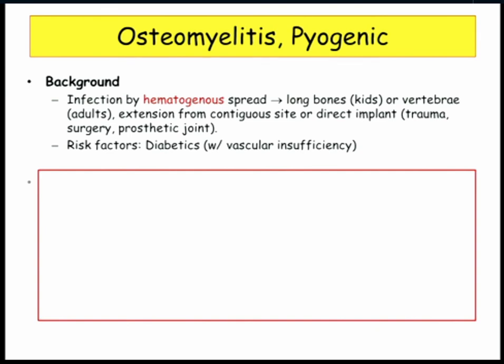Or in adults, extension from a contiguous site in the setting of trauma. But in kids, it's really about hematogenous spread. Risk factors: diabetes, vascular insufficiency.